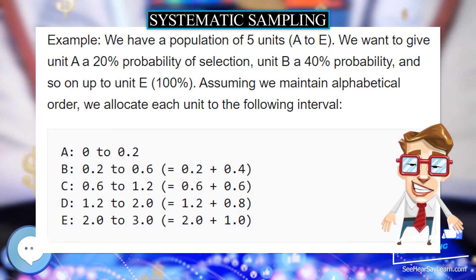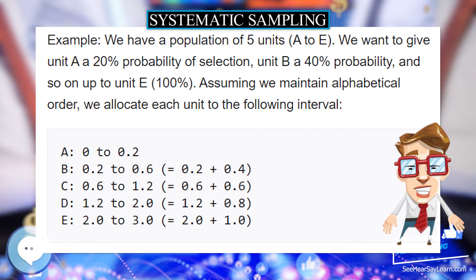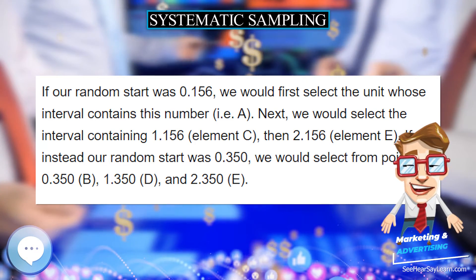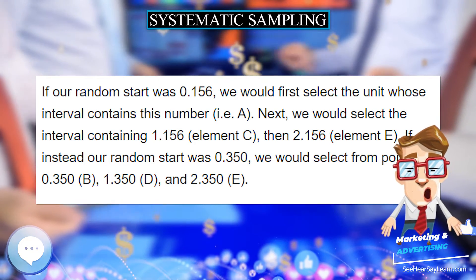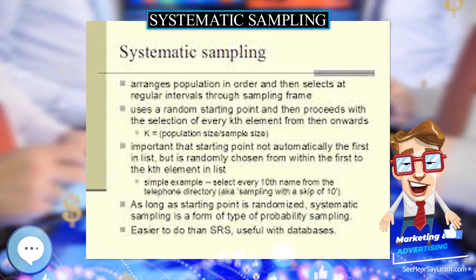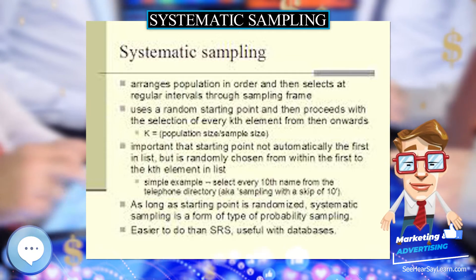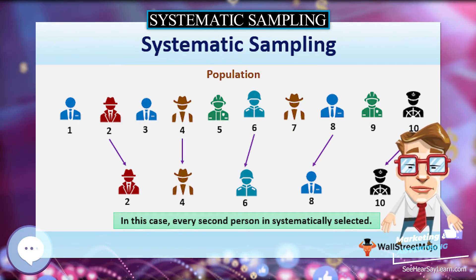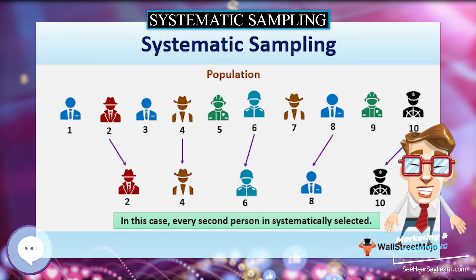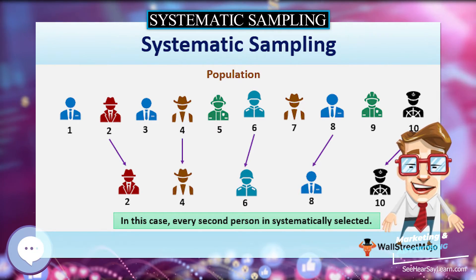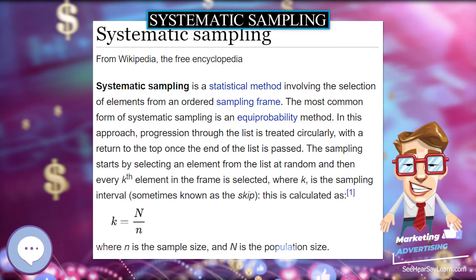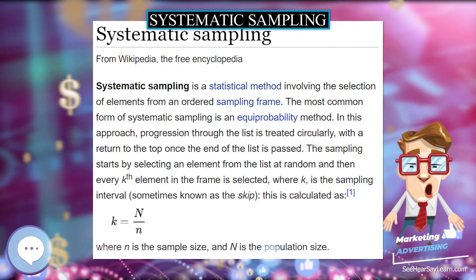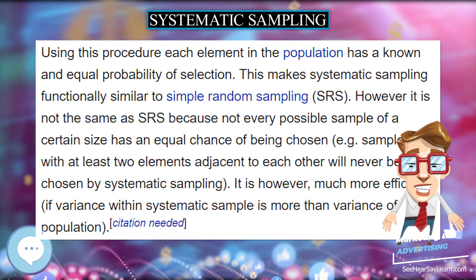Using this procedure, each element in the population has a known and equal probability of selection. This makes systematic sampling functionally similar to simple random sampling, SRS. However, it is not the same as SRS because not every possible sample of a certain size has an equal chance of being chosen. For example, samples with at least two elements adjacent to each other will never be chosen by systematic sampling.